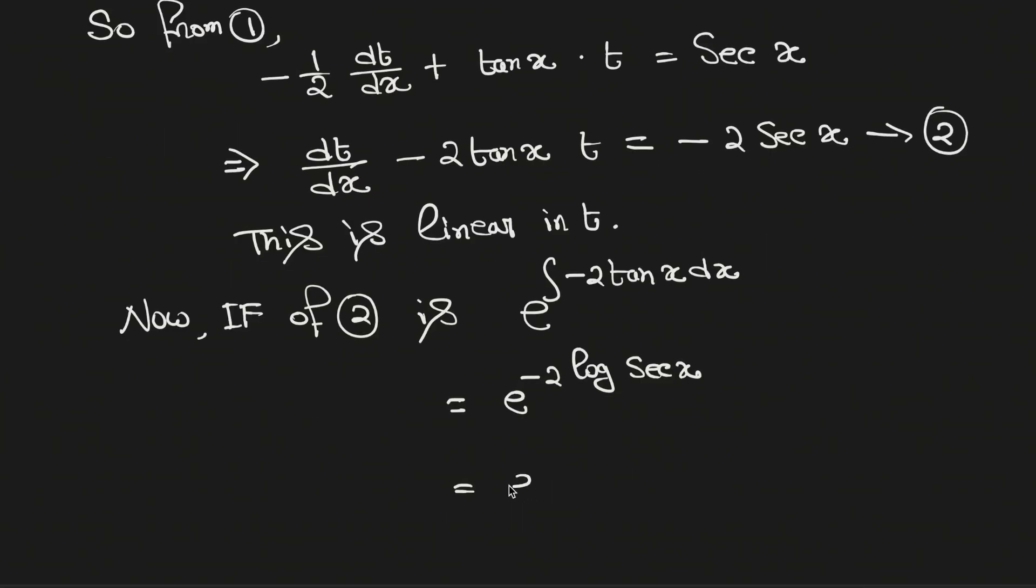And this can be written as e to the power log of sec x to the power negative 2, which equals sec x to the power negative 2, which is same as 1 over sec square x.